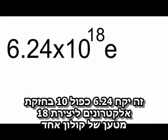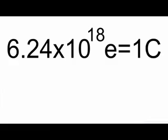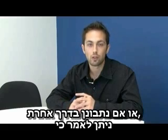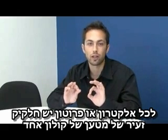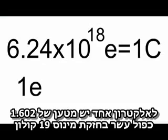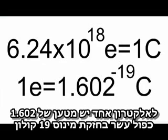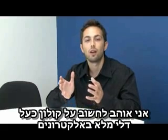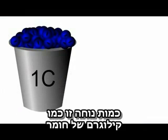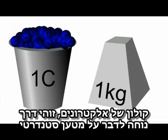It would take 6.24 times 10 to the 18 electrons to make up one coulomb of charge. Or, looking at this a different way, you could say that each electron or each proton has only a tiny fraction of a coulomb of charge. One electron has 1.602 times 10 to the minus 19 coulombs of charge. I like to think of a coulomb as a little bucket full of electrons — it's this convenient amount. Like a kilogram of material, a coulomb of electrons is a nice, convenient way of talking about a standard unit of charge.